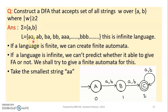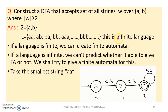So we need the minimum length of the string to be 2. Using the two symbols a and b, we can form strings like aa, ab, ba, bb for length 2, and continue to longer strings like aab, abb, and so on. So it is an infinite language.